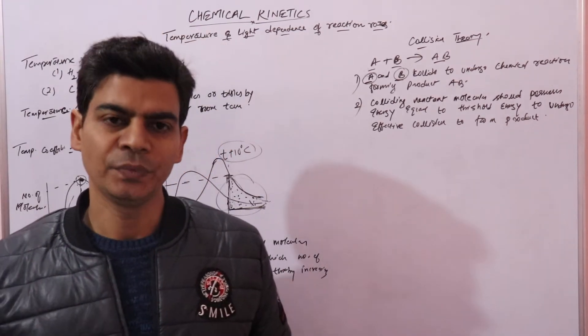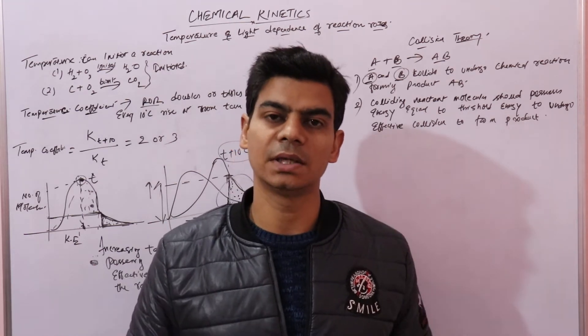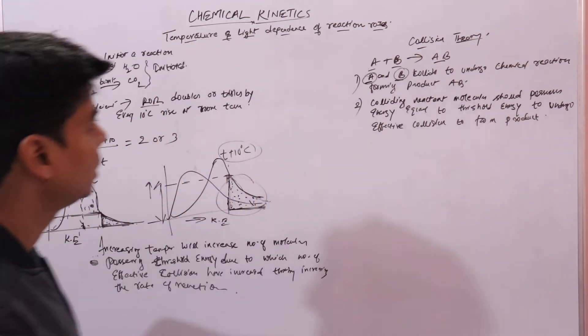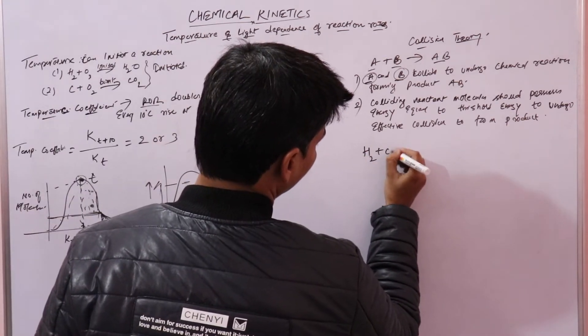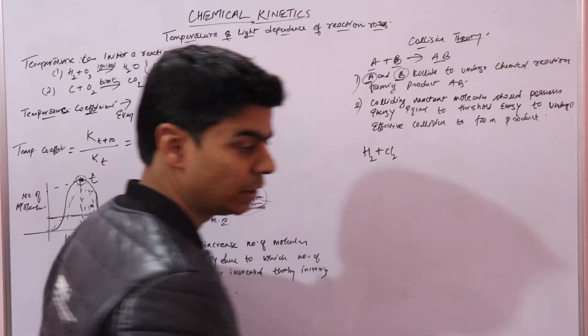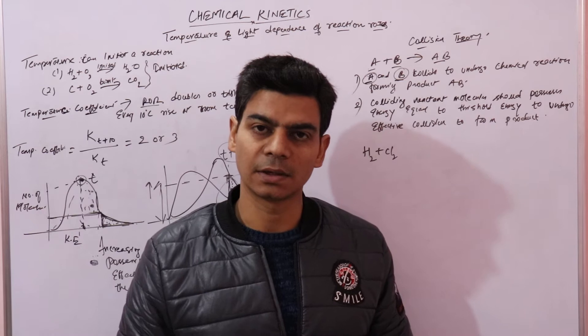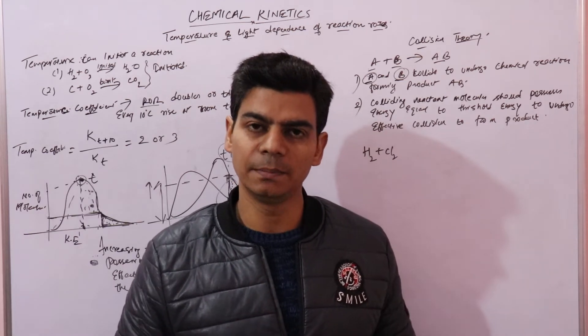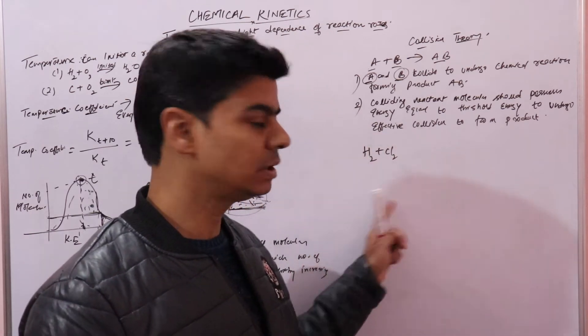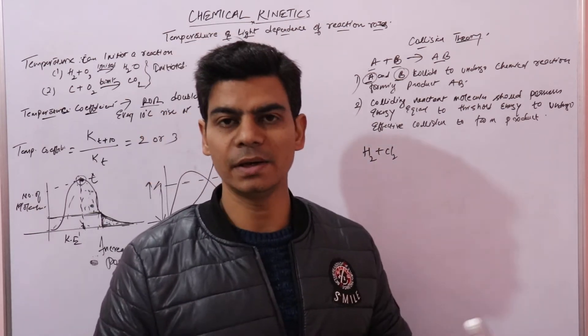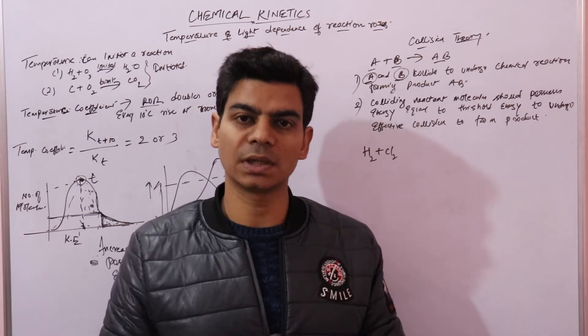Now in this lecture we will discuss how light can increase the rate of reaction. There is a reaction that we are aware of: the reaction between hydrogen and chlorine does not take place in the dark, but in the presence of diffused sunlight the reaction will start taking place. And if this reaction mixture is exposed to direct sunlight, then an explosive reaction will take place.